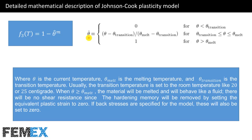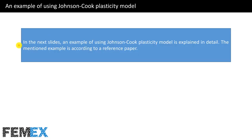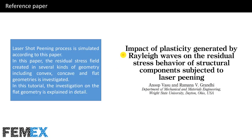If back stresses are specified for the model, these will also be set to zero. In the next slides, an example of using the Johnson Cook plasticity model is explained in detail. The mentioned example is according to a reference paper: 'The impact of plasticity generated by Rayleigh waves on the residual stress behavior of a structural component subjected to laser peening.'